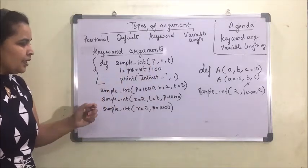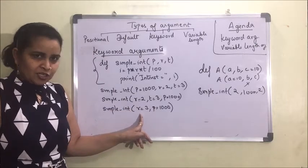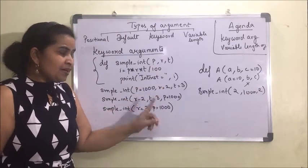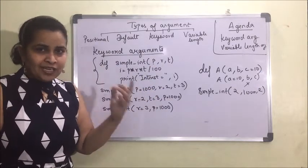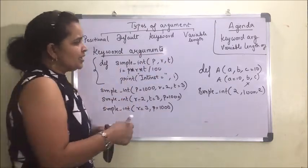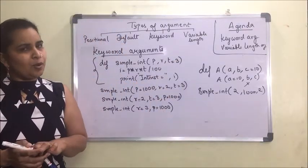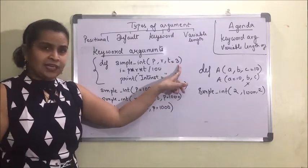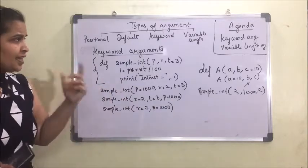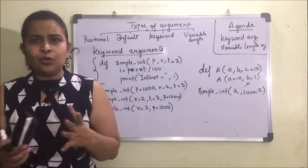Now suppose in a third function call we provide r and p but not t. Since the arguments and parameters don't match, it will generate an error. However, if we use a default argument for t, then t will take its default value and no error will be generated.